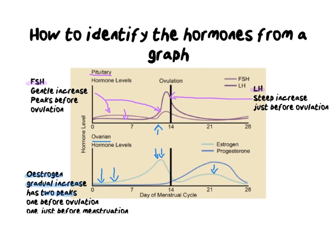That second estrogen peak around day 21 does not happen with LH — LH is flat at day 21. The two estrogen peaks have different functions. The peak before ovulation tells the body the endometrium is now thick and ready. The second peak around day 21 tells the body it is now time to shed the endometrium — in other words, to cause menstruation, i.e., a period.